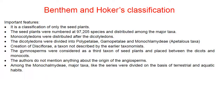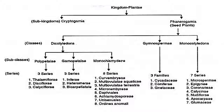Dicots were divided into polypetalae, gamopetalae, and monochlamydeae. The creation of Disciflorae, a taxon not described by earlier taxonomists, is notable. Gymnosperms were considered as a third taxon of seed plants and placed between the dicots and monocots. Bentham and Hooker did not mention anything about the origin of angiosperms. Among the monochlamydeae, major taxa called series were divided on the basis of terrestrial and aquatic habits.